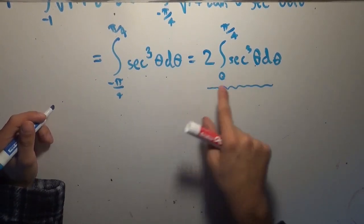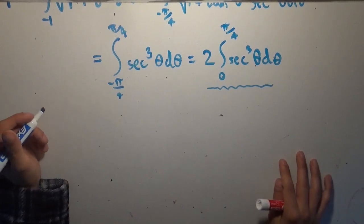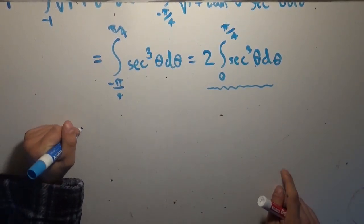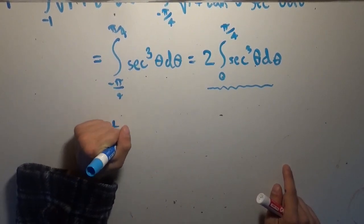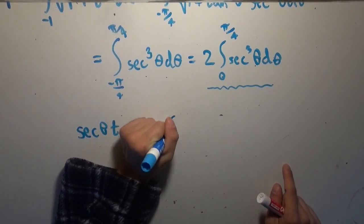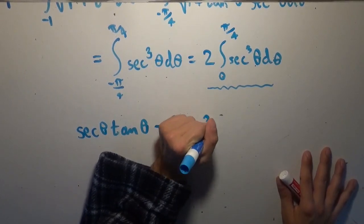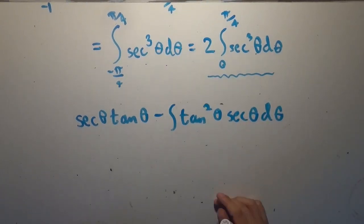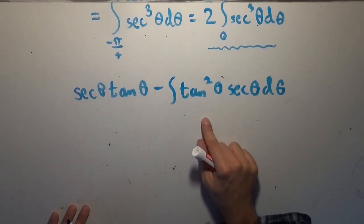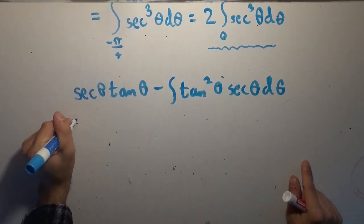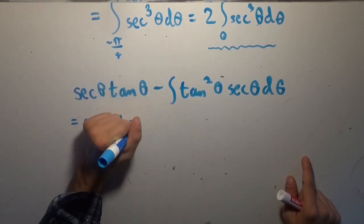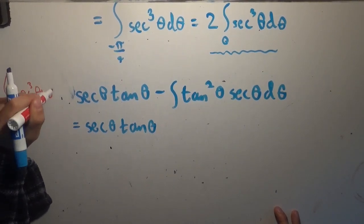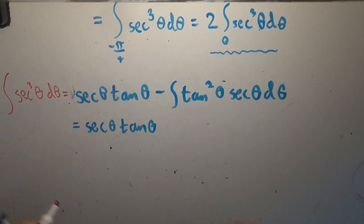We're going to pretend the coefficient of 2 and the bounds aren't there and just do the integral of secant cubed. Based on the differentiation and integration we just did, we end up with secant theta times tangent of theta, minus the integral of tangent squared theta times secant theta d theta. But tangent squared is secant squared minus one, and this is equal to the integral of secant cubed theta d theta — that's what we're solving for.